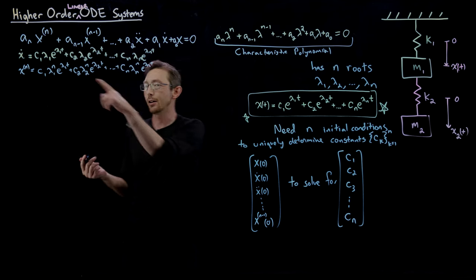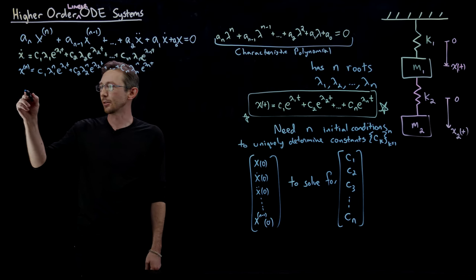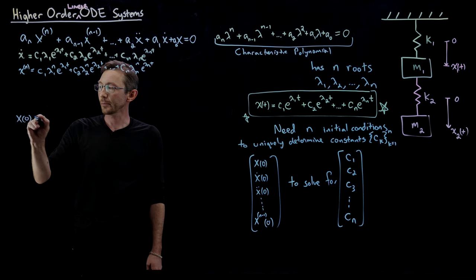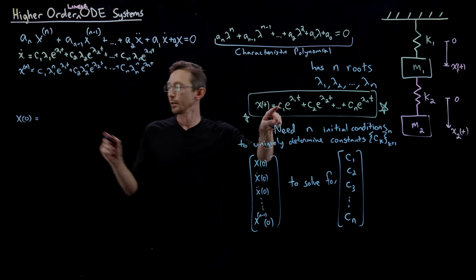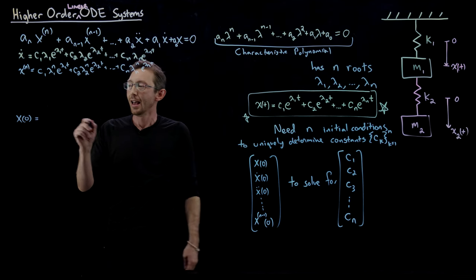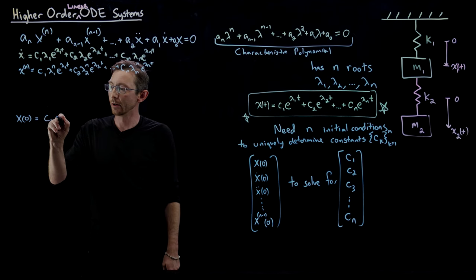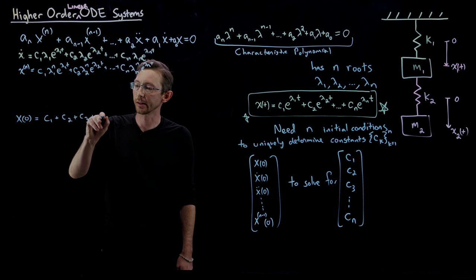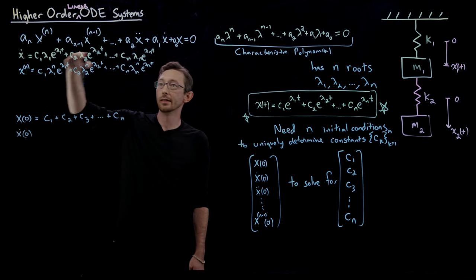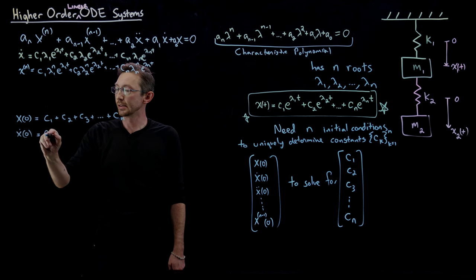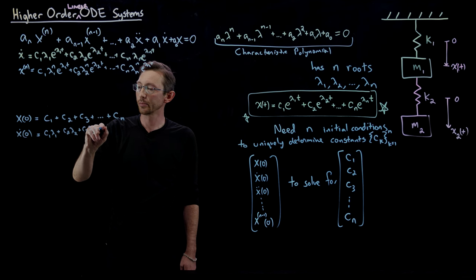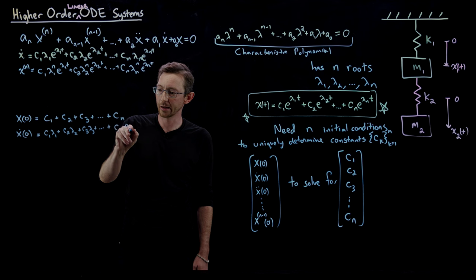Now I'll write this out: x(0) equals c₁ + c₂ + c₃ + c₄ + ... And x-dot at zero is going to be c₁ λ₁ + c₂ λ₂ + c₃ λ₃ + ... + cₙ λₙ.